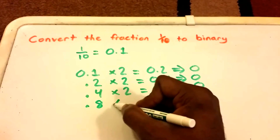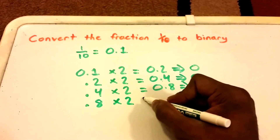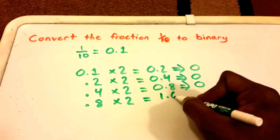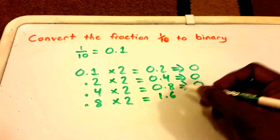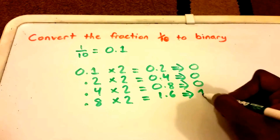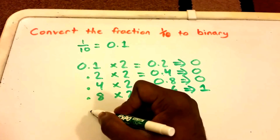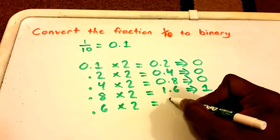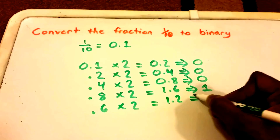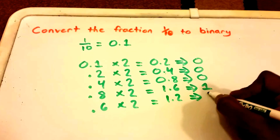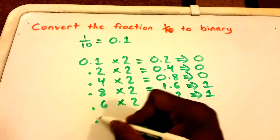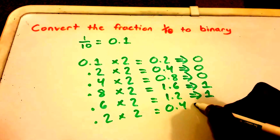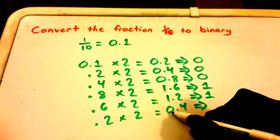Then we take the 0.8, multiply it by 2 — oh sorry, that's 1.6 — and we record the number in front of the decimal point, which this time is 1. Then we take the 0.6, multiply it by 2, and we get 1.2. We record the number in front of the decimal point, which is 1.